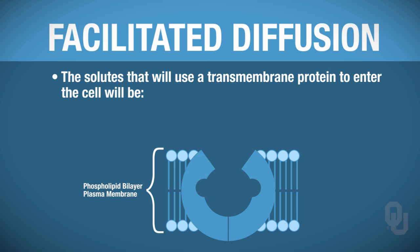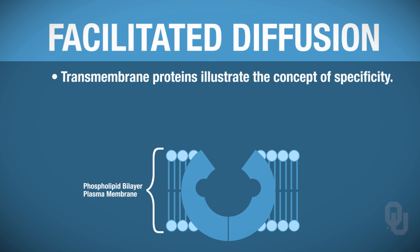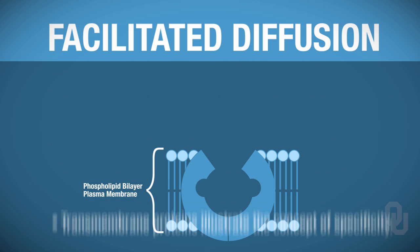The solutes that are going to be using a transmembrane protein are going to be hydrophilic and lipophobic. They're going to be large and polar — polar means that the solute has charges. Large solutes that also have a charge can use a transmembrane protein. Transmembrane proteins — both carriers and channels — illustrate the concept of specificity, as you'll see shortly.